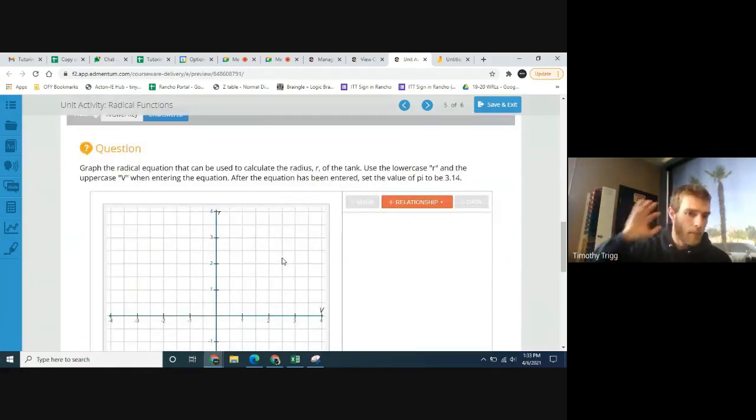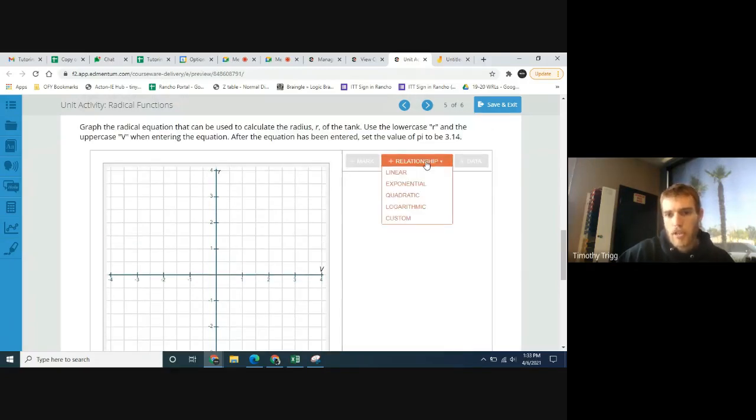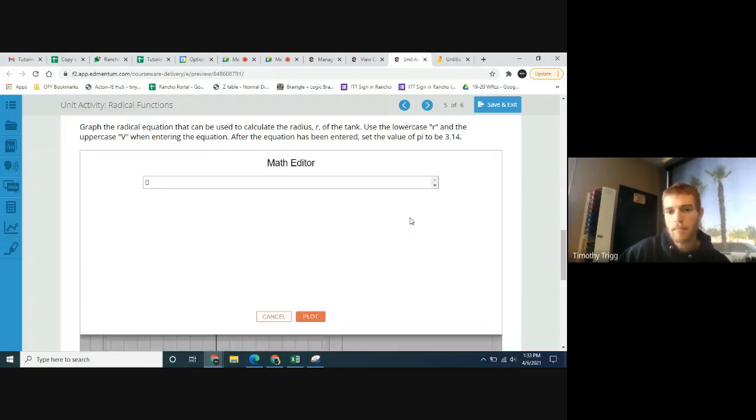Part C. Graph the radical equation that can be used to calculate the radius r of the tank. Use the lowercase r and the uppercase v when entering the equation. After the equation has been entered, set the value of pi to 3.14. So how do we use this graphing tool? What we're going to do is go to relationship. Usually I don't even use any of these except I always use custom. If you use custom, it's basically can do all this stuff and more.